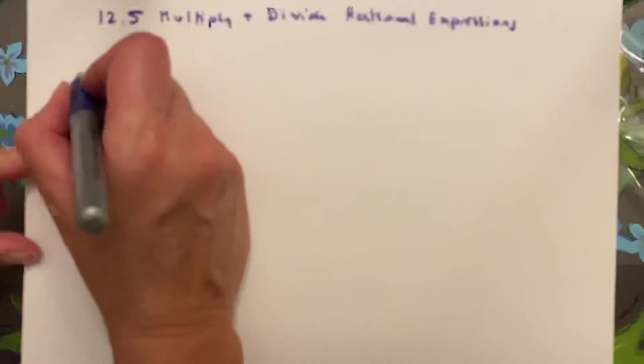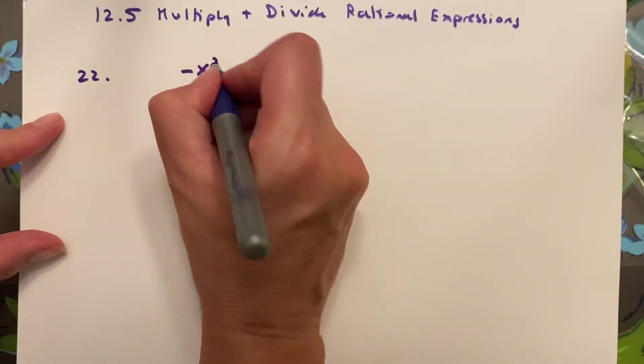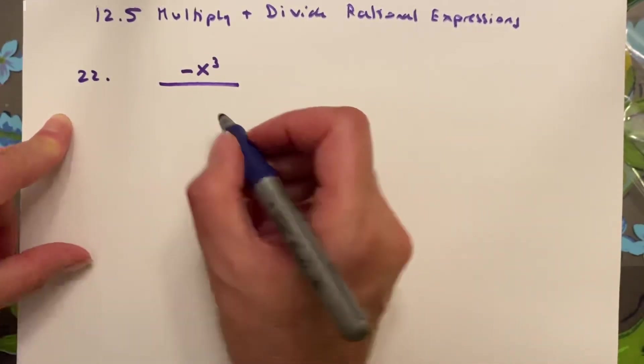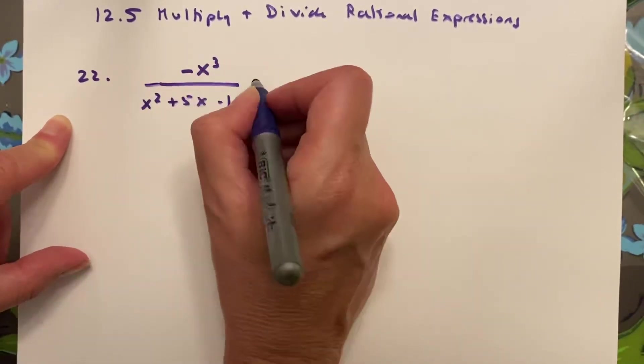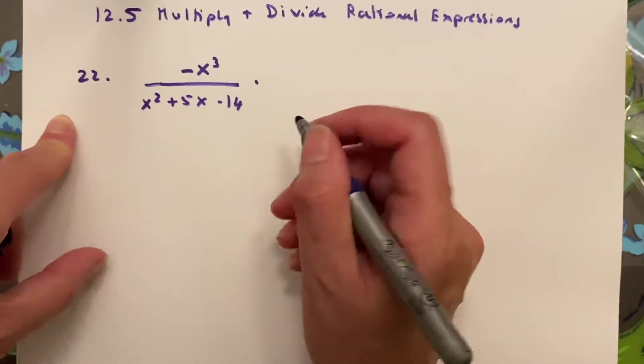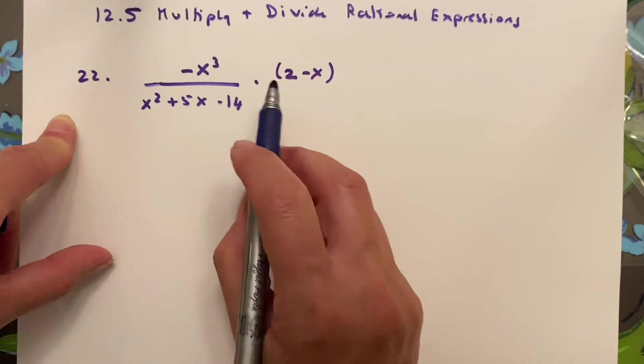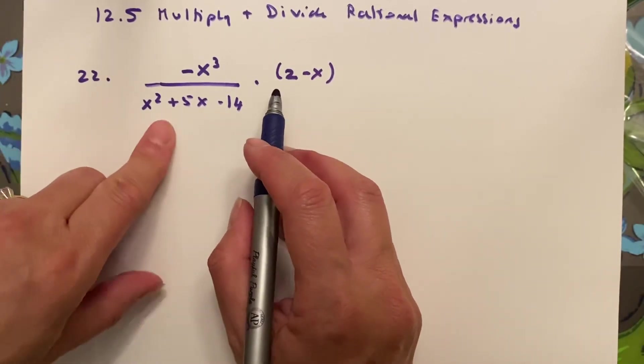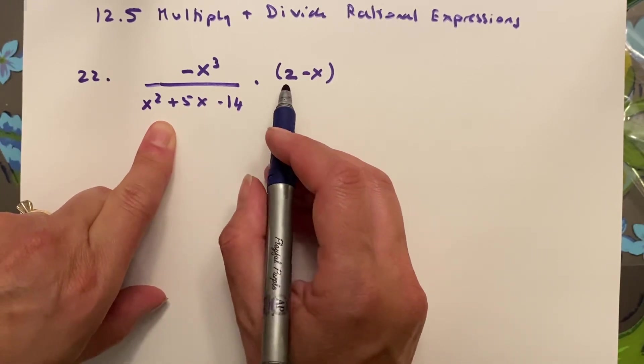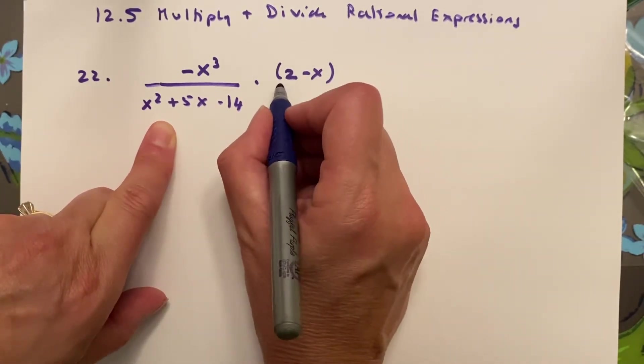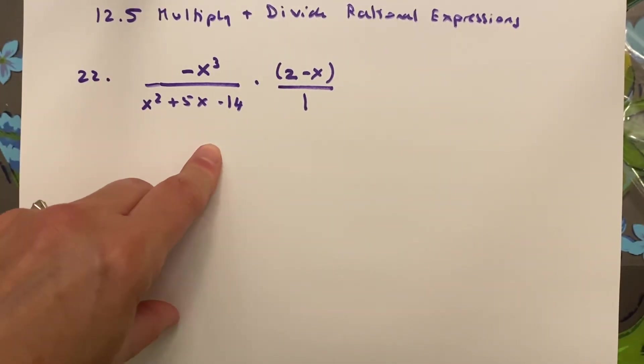If I have negative x cubed over x squared plus 5x minus 14, and this is multiplied by 2 minus x. Now when you write 2 minus x, it's important to know that if they have a number like that it's always going to be in the numerator, so write it carefully in the numerator. And if you're just not sure, put it over 1 as it'll help you make sure it's in the correct place.